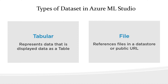The next dataset type option is the file dataset type. Using this allows you to connect to files in the data store or a public URL. The idea is to download or mount these files to your compute resources. Because these compute resources are VMs, you can mount files up to them. When we go through the demo, we'll see where you can specify what dataset type you wish to use when adding your data sources to Azure Machine Learning Studio.